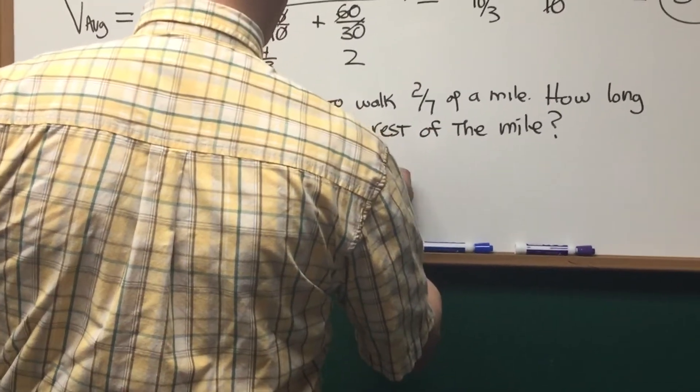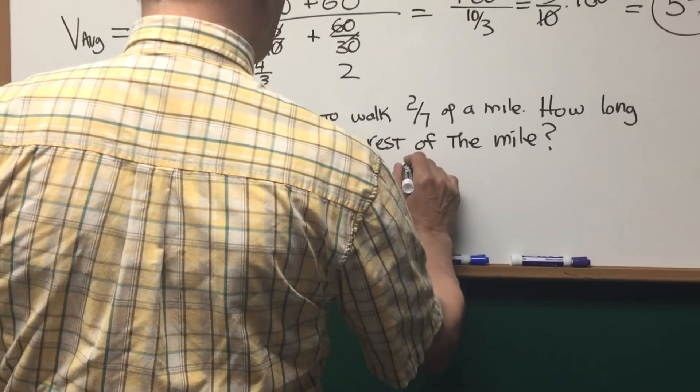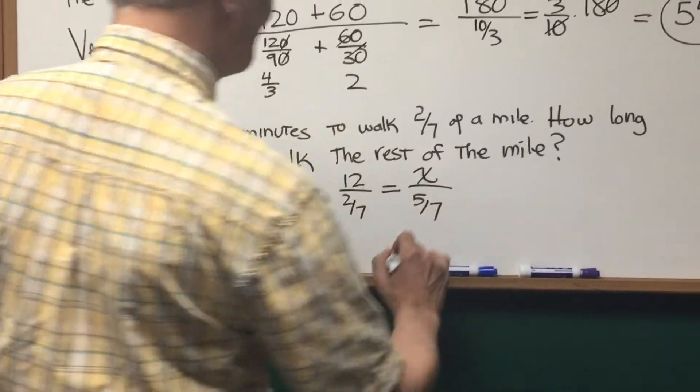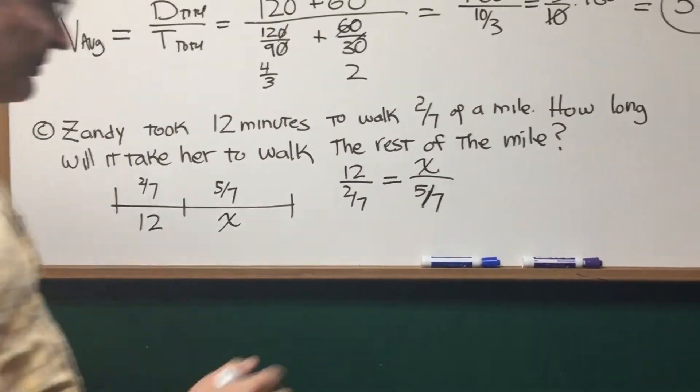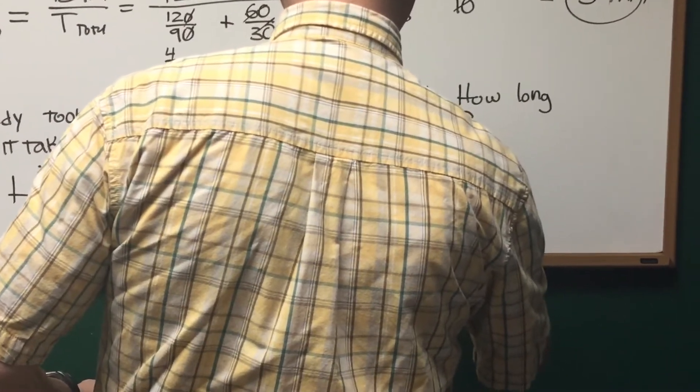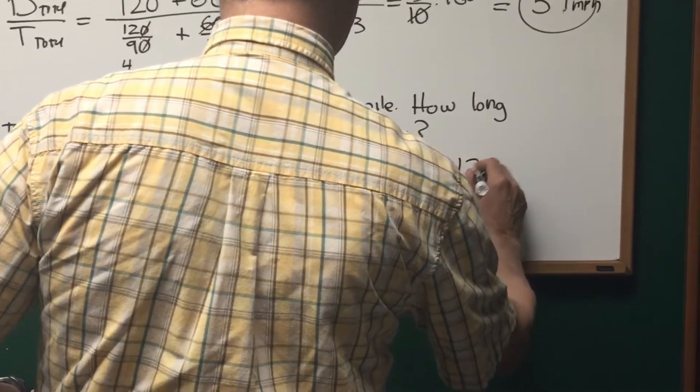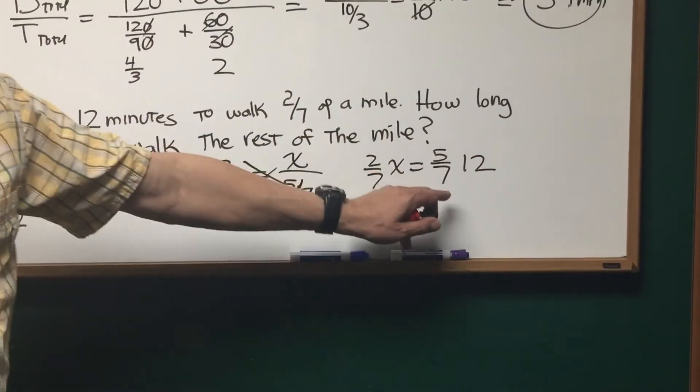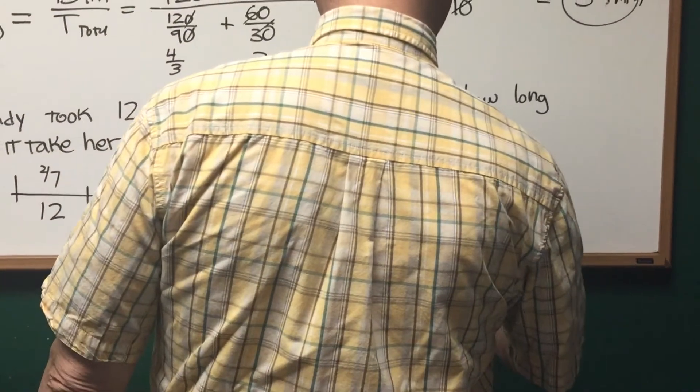How about 12 over 2 sevenths is equal to x over 5 sevenths. All right, and then we can do some cross-multiplication. All right, cross-multiplication to get 2 sevenths of x is equal to 5 sevenths of 12. And I think you can see the 7s cancel out. Multiply both sides by 7, and we'll get 2x